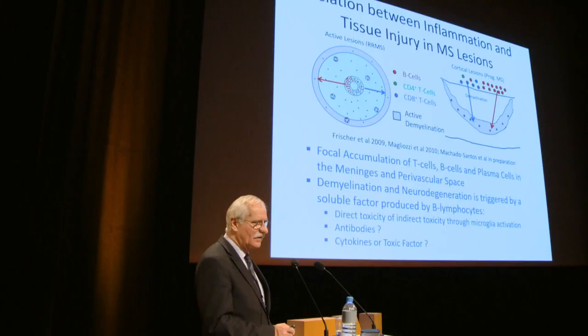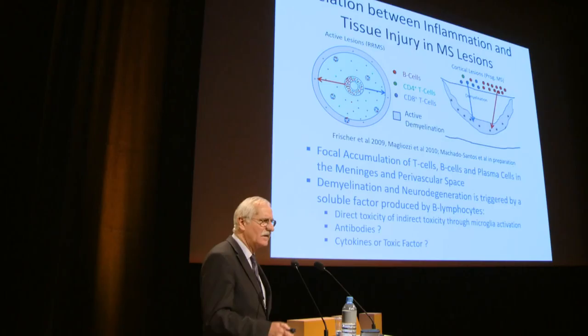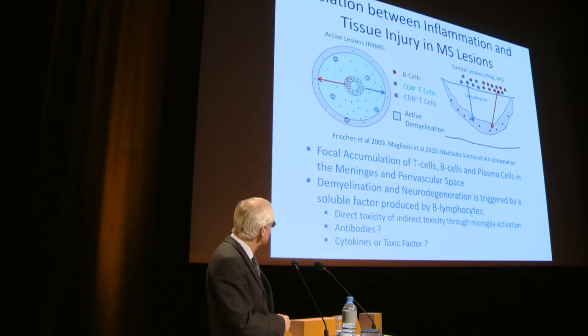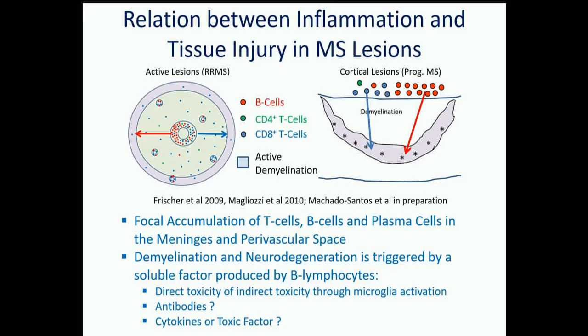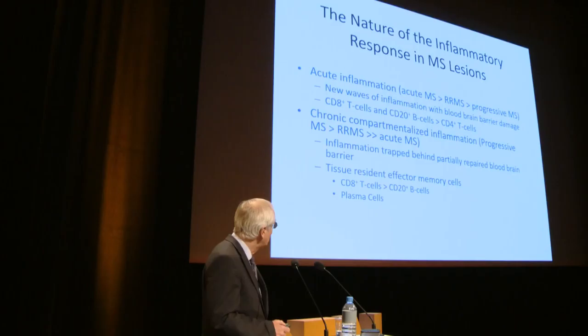The identity of the demyelinating factor is currently unclear. In EAE animals, it is clearly anti-MOG antibodies, but those are not present in MS patient brains. Research by Bob Lissak showed it is a factor produced by B lymphocytes that is not immunoglobulin — demyelinating activity persists after removing all immunoglobulins. Whether it is a mixture of cytokines or a specific factor remains uncertain.